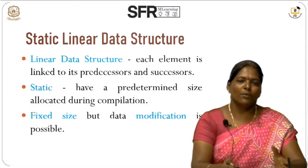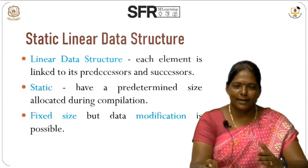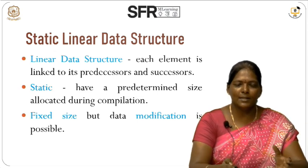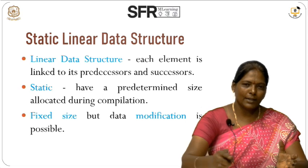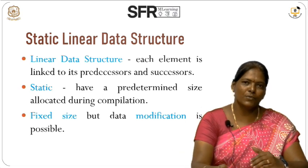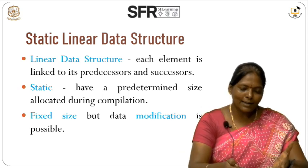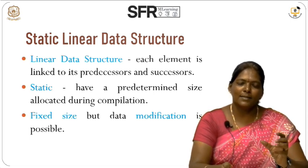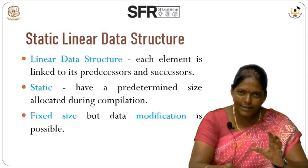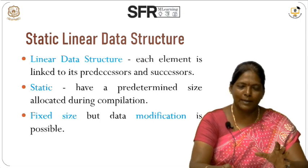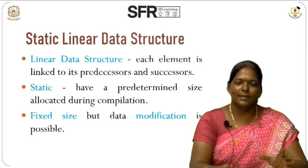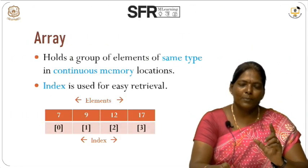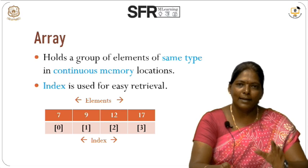Now we are going to see what is the static linear data structure. Linear means elements are stored in a continuous manner — each element can be accessed continuously and they have a link between their predecessors and successors. Static means this data type has a predefined size allocated for memory. The size is fixed; the data can be modified, but the size cannot be modified. One best example of a static linear data structure is the array.